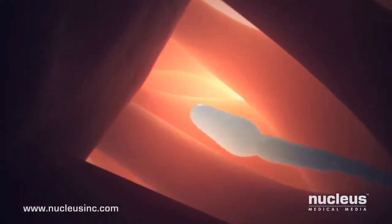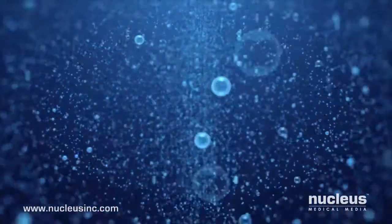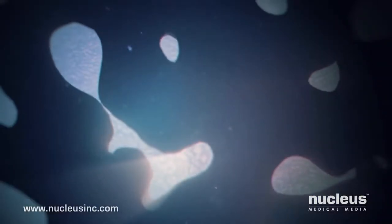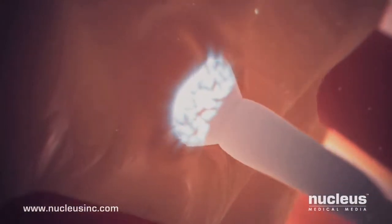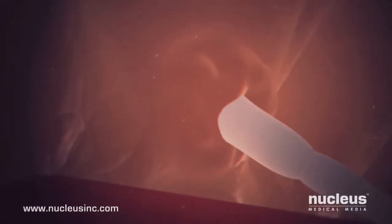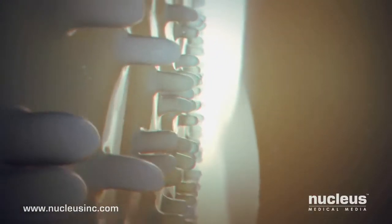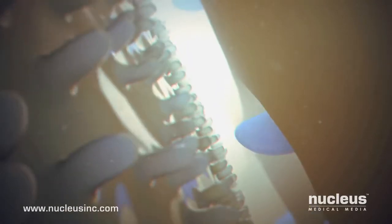When sperm reach the zona pellucida, they attach to specialized sperm receptors on the surface, which triggers their acrosomes to release digestive enzymes, enabling the sperm to burrow into the layer. Inside the zona pellucida is a narrow, fluid-filled space just outside the egg cell membrane. The first sperm to make contact will fertilize the egg.